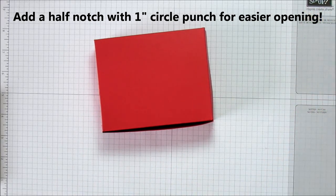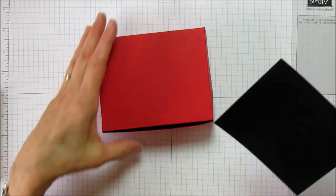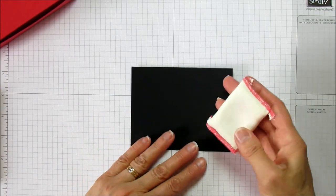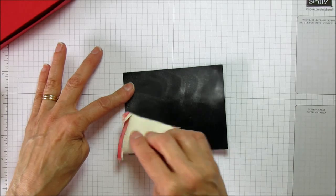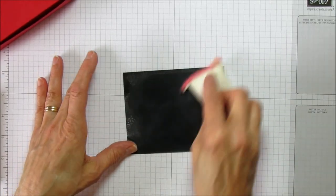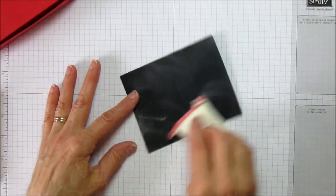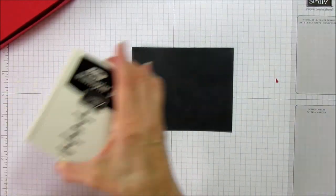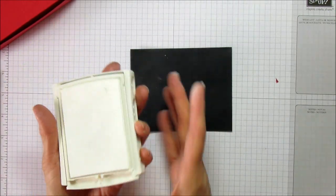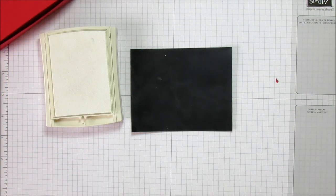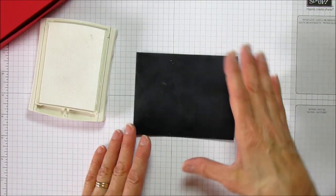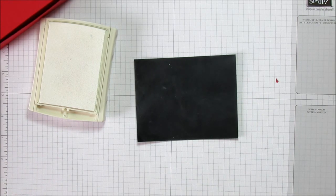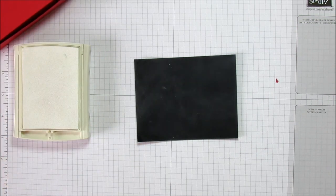Now we're ready to do the chalkboard. You're going to use your emboss buddy, and what I did was I just - because it makes it look like it's chalk. This is what I use to make it look chalky. You can make it as chalky as you want. I just think it looks so cute like it's been written on.